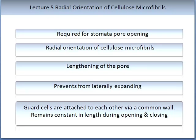Radial orientation occurs in the cellulose microfibrils of the pores, which is required for stomata pore opening. It enables the pore to lengthen when being opened while preventing lateral expansion. A second structural feature of the guard cells is that they are attached to each other via one common wall, which remains constant in length during opening and closing. Both the radial orientation of cellulose microfibrils and the common wall enable the guard cells to open correctly — this opening is called the aperture.